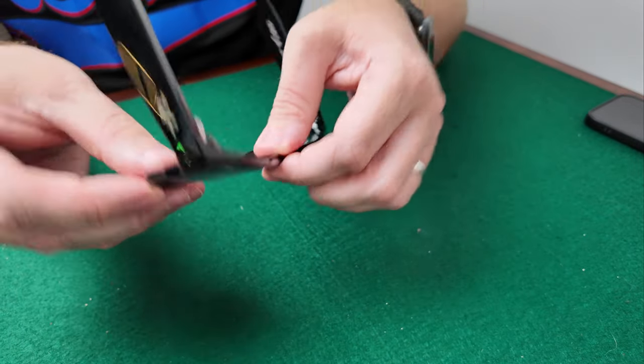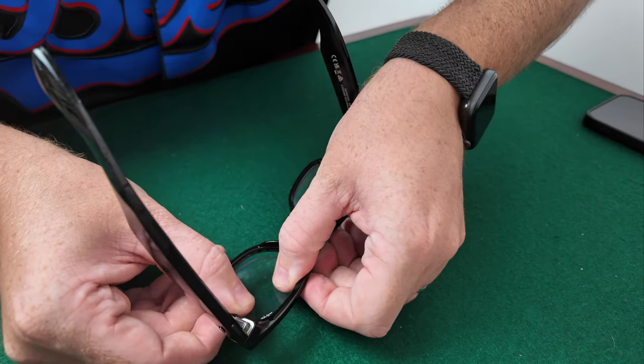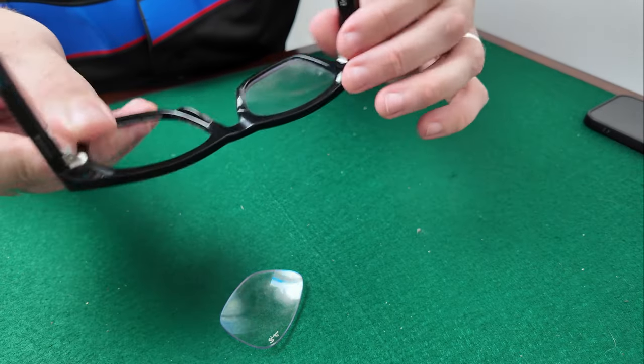We'll start with the right eye first. We're just going to push, and maybe you'll hear a little click, and just like that, the lens comes out. Now you've got a lens free.